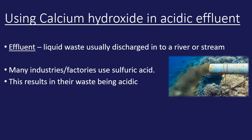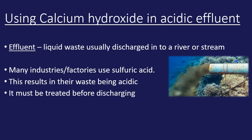From one of the previous videos, you'll recognize metal hydroxides as bases. Bases will react with acid to produce a neutralization reaction. In this case, if we treat sulfuric acid with calcium hydroxide, we'd produce a salt of calcium sulfate and water, therefore neutralizing the acidic effluent so it's no longer going to cause as much damage to the environment as it would have done as a low pH sulfuric acid.